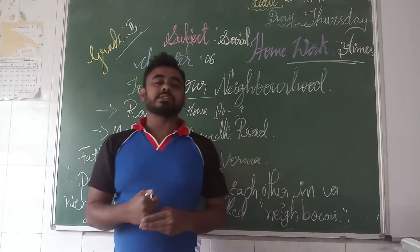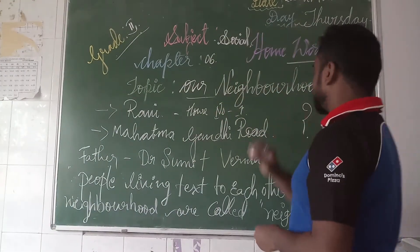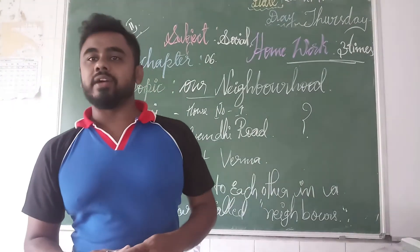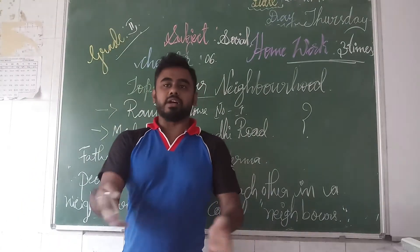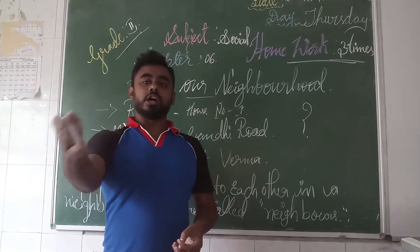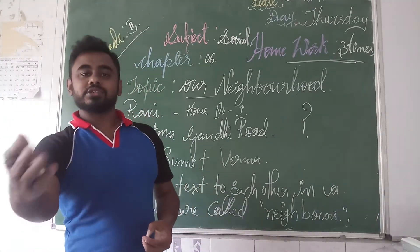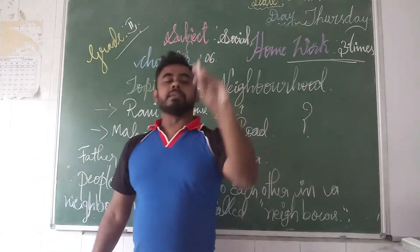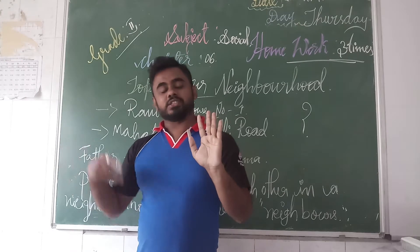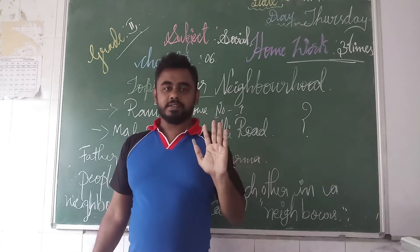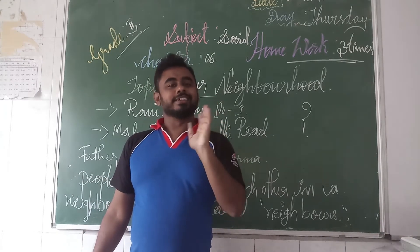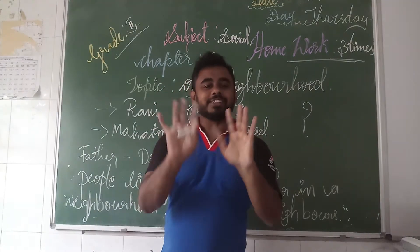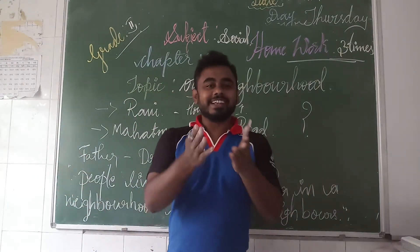I need to ask one question for you. Can you name at least five families which live next to your house, or next to your block, or next to your flat? Name five families' names. They are considered to be your neighbors. Very good — so they are called your Naibor.